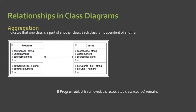We have aggregation. Aggregation is a kind of association similar to composition, in that a whole-part or part-of relationship is represented. It is represented by a hollow diamond shape. In composition it was a filled diamond shape, but in aggregation it is hollow.